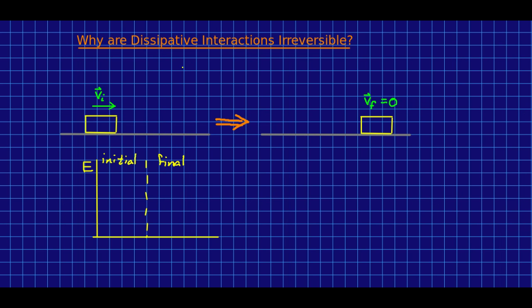Let's talk about why dissipative interactions are irreversible. So here's a very simple dissipative interaction: a block sliding across a floor that eventually comes to rest because of friction. As it goes across the floor, because of the friction, it warms up a little bit, and the floor warms up a little bit too.